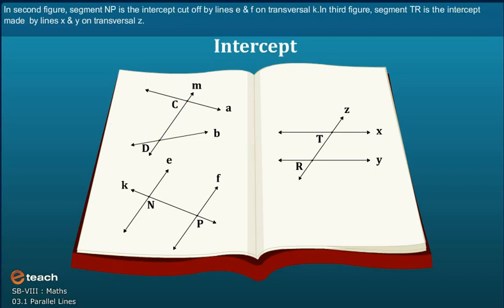In the second figure, segment NP is the intercept cut off by lines E and F on transversal K. In the third figure, segment TR is the intercept made by lines X and Y on transversal Z.